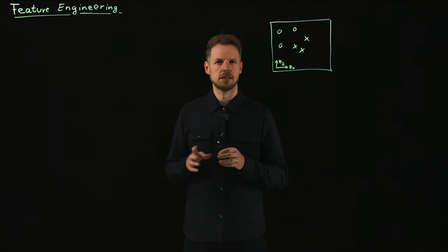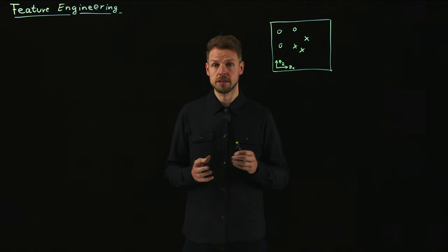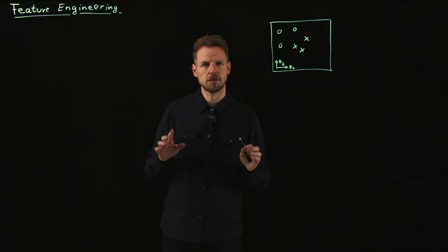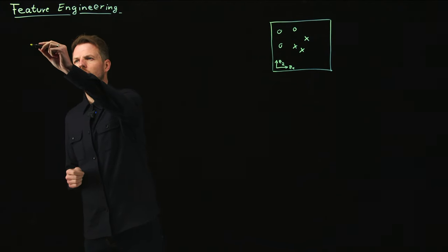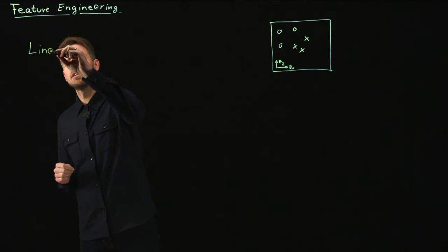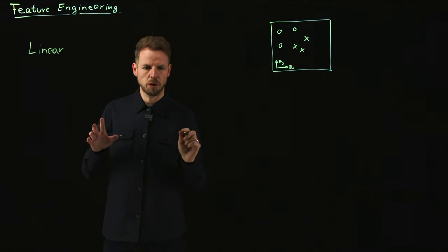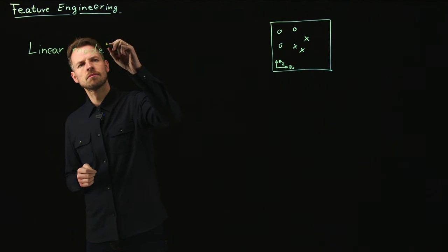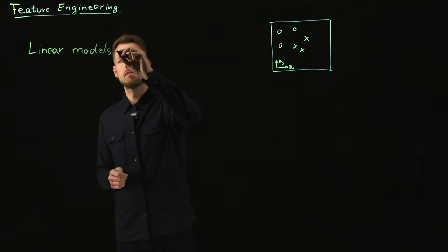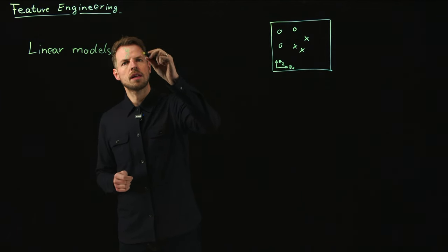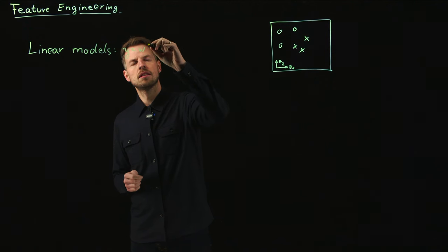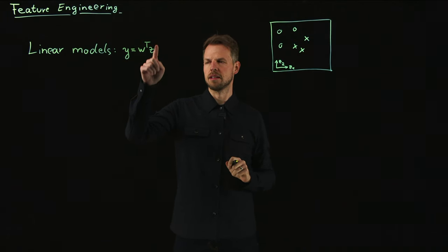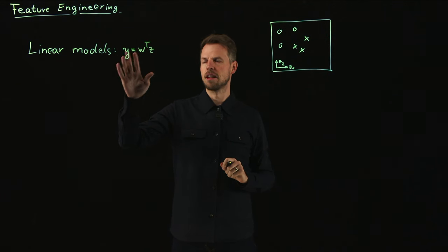Before we start, let's consider the simplest class of models that we have studied extensively in the beginning of this course, which is the class of linear models. So some output y is generated by a linear mapping of the input z. This could be your system state at a given time point mapped to the system state at the next time point.